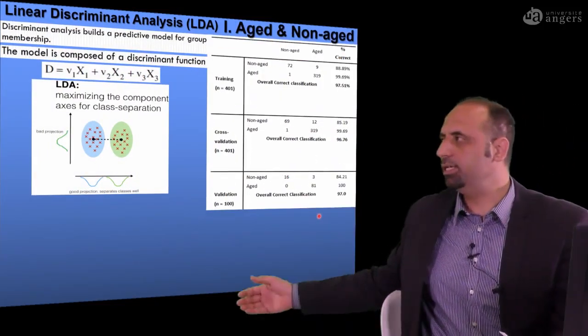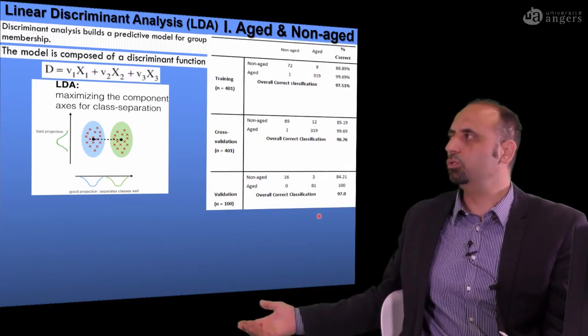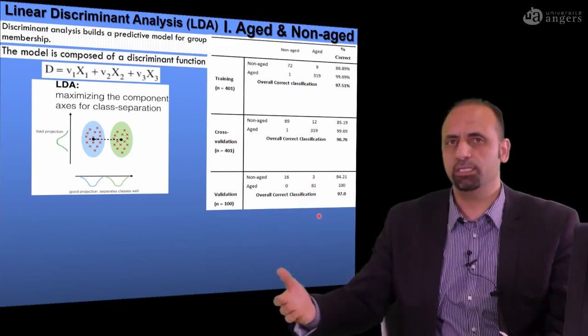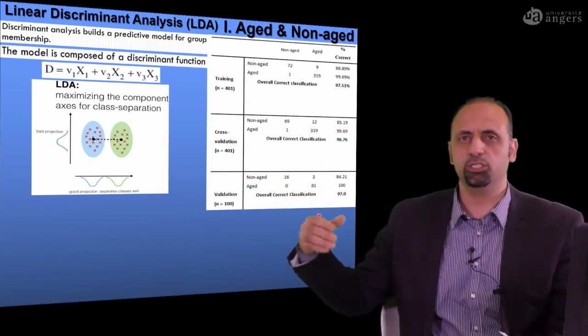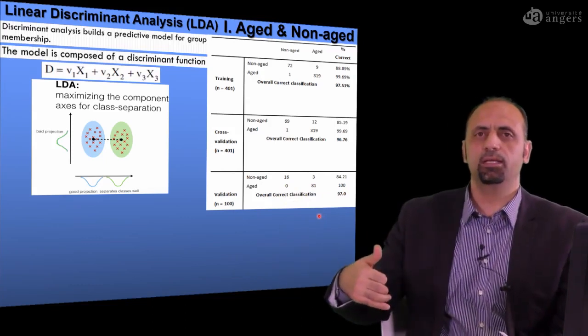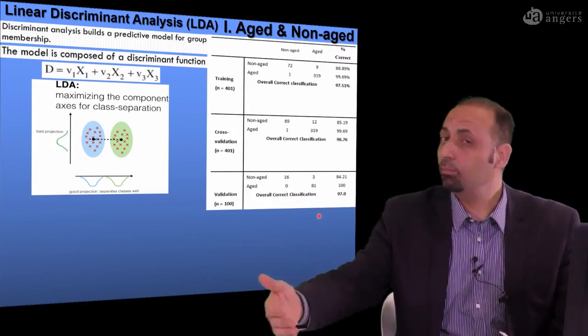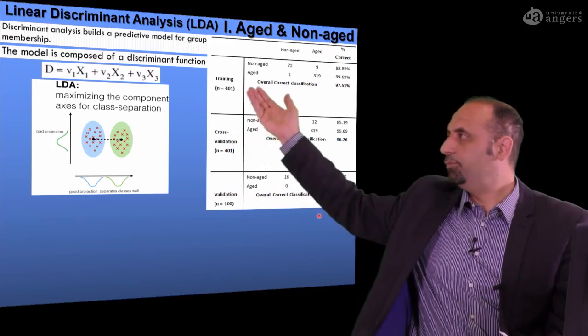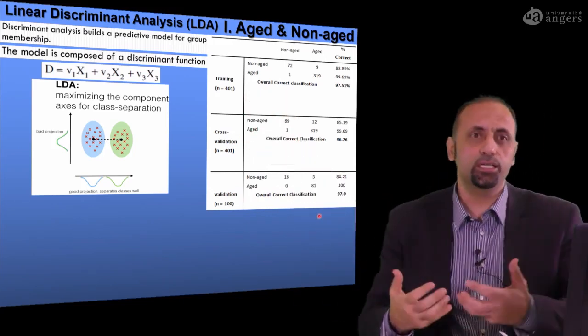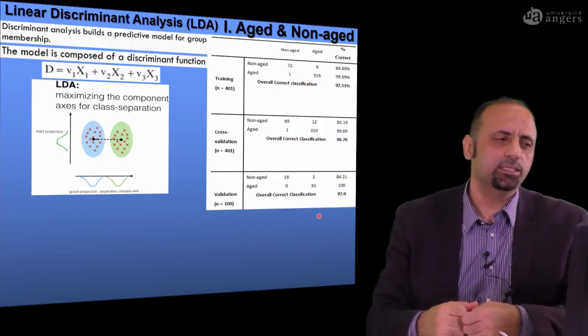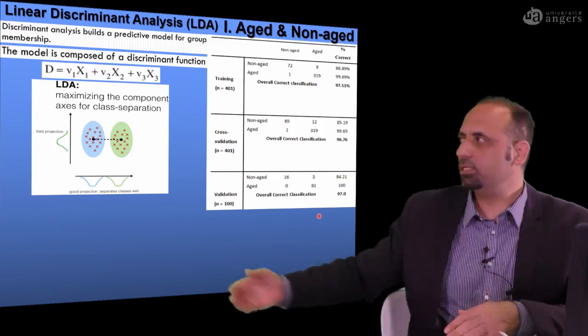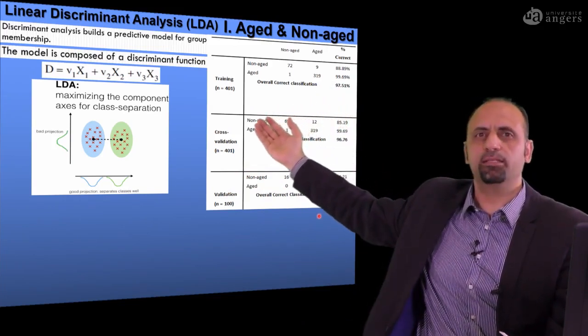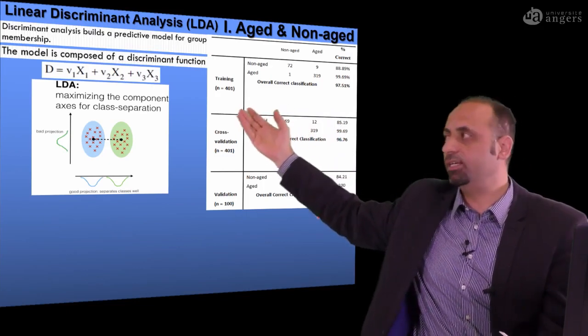This is a model, very simple model, it's called linear discriminant analysis model. To build this linear discriminant analysis model, you need to categorize your data to different categories like aged, non-aged, germinated, non-germinated, or normal or abnormal. And this is the first results of our data. As you see here, if you need to predict whether this seed is already aged or non-aged, the model we developed has a high percentage of accuracy. It is 97.5% of accuracy in the training set.